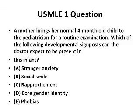Let's consider another question. A mother brings her normal four-month-old child to the pediatrician for a routine examination. Which of the following developmental signposts can the doctor expect to be present in this infant? A — stranger anxiety; B — social smile; C — rapprochement; D — core gender identity; or E — phobias. The right answer is probably B, social smile. Stranger anxiety is developed a little bit later. Rapprochement is developed much later, when the kid wants to be separated from their mother and then decides to come back. Core gender identity and phobias both develop much later in development.